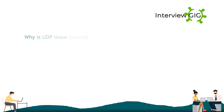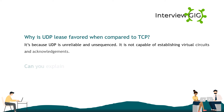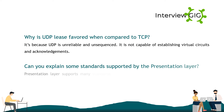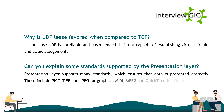Why is UDP less favored when compared to TCP? It is because UDP is unreliable and unsequenced. It is not capable of establishing virtual circuits and acknowledgements. Can you explain some standards supported by the presentation layer? The presentation layer supports many standards which ensure that data is presented correctly, including PICT, TIFF, and JPEG for graphics, and MIDI, MPEG, and QuickTime for video and audio.